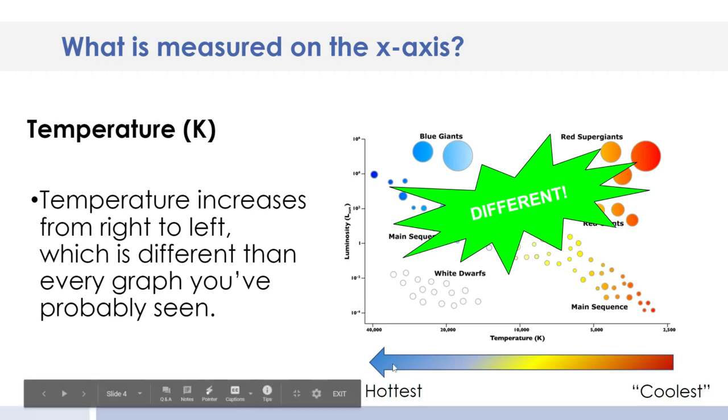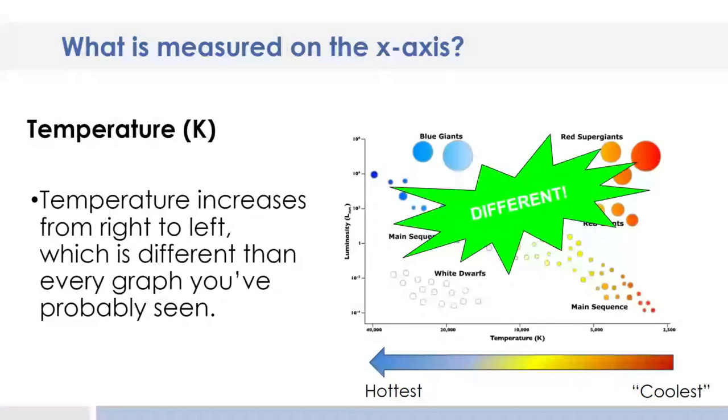The hotter stars on the left, and the cooler stars are on the right, and you might see cooler in quotation marks because even the cooler stars are still very hot at 2500 Kelvin. Sorry, we don't actually say degrees, just say 2500 Kelvin.